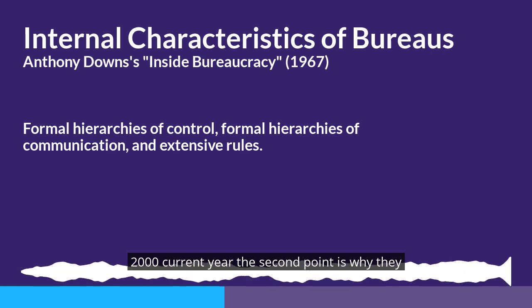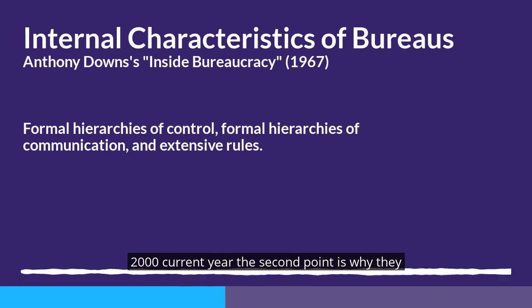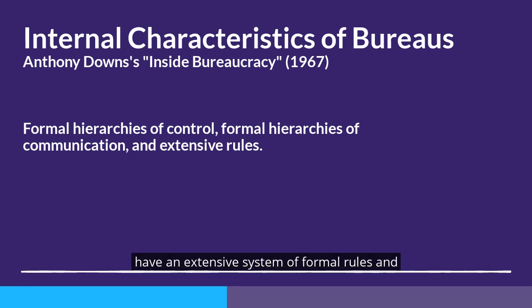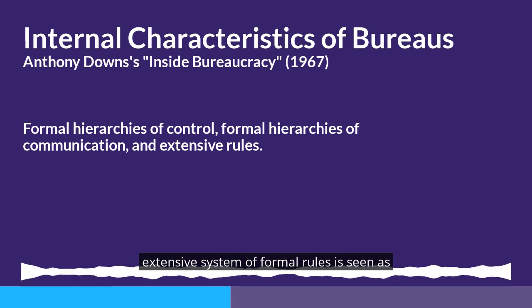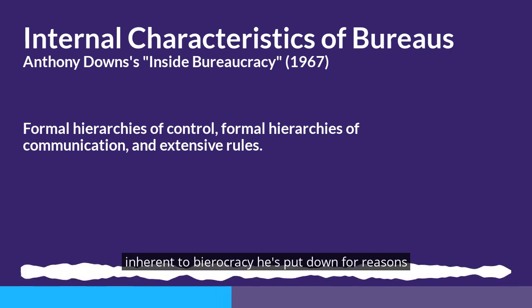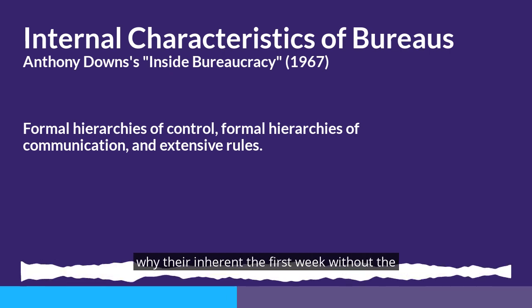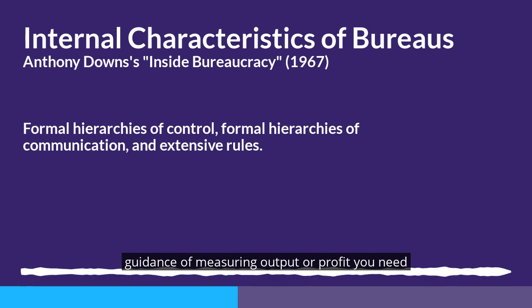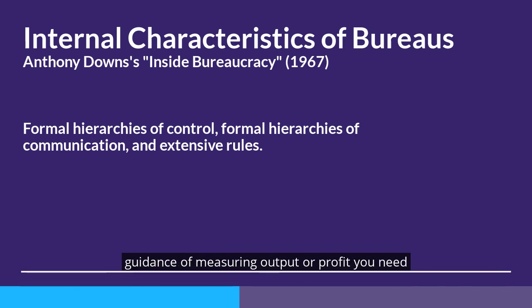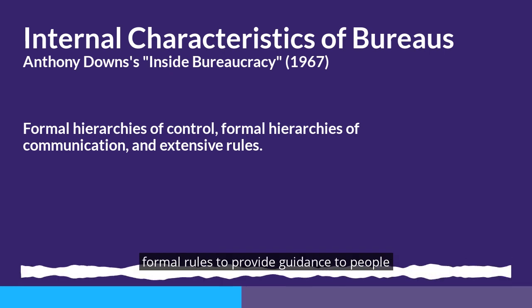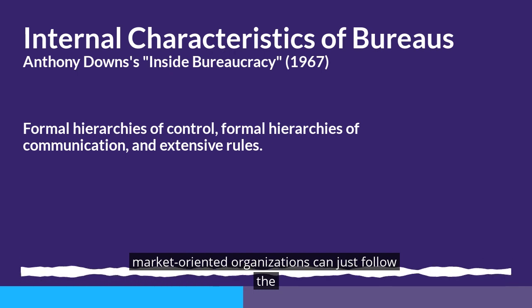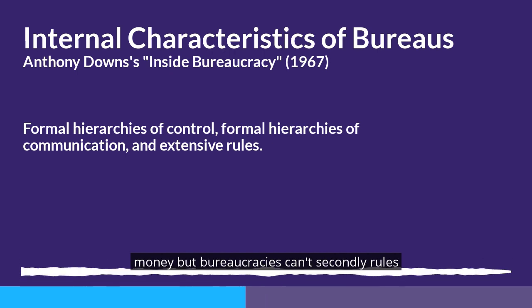The second point is why bureaucracies have an extensive system of formal rules. An extensive system of formal rules is seen as inherent to bureaucracies, and Downs gives four reasons why they're inherent. Firstly, without the guidance of measuring output or profit, you need formal rules to provide guidance to people. Market-oriented organizations can just follow the money, but bureaucracies can't.